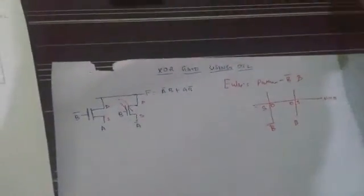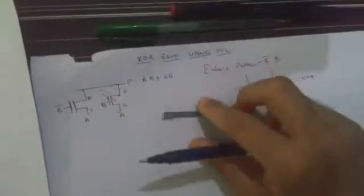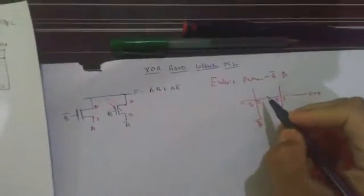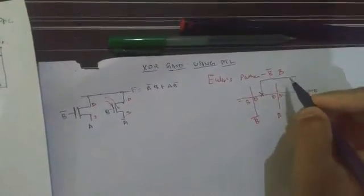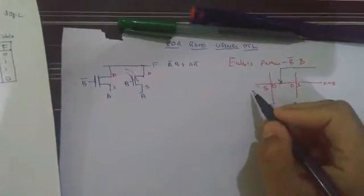So we take this and connect to the output. And at this terminal we apply source A, and at this terminal we apply A bar.